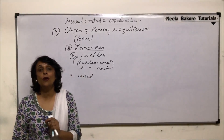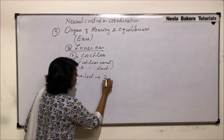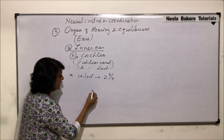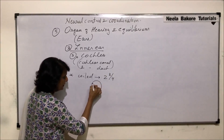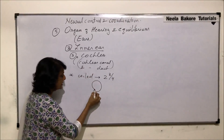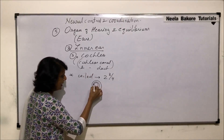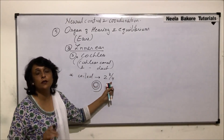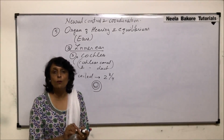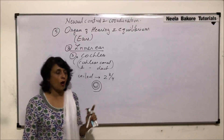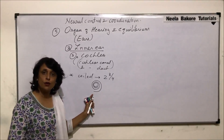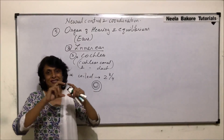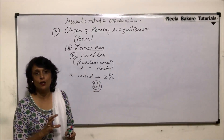The cochlea is a coiled tube and it shows two and three-fourth coiling. This means if we consider the cochlea starting from one point, one complete 360° turn is the first coil, a second turn, and then two-thirds more — so two and three-fourth turns total. Because the structure is difficult to understand in coiled form, we normally straighten it to understand the structure and then visualize how the coiled part would be.